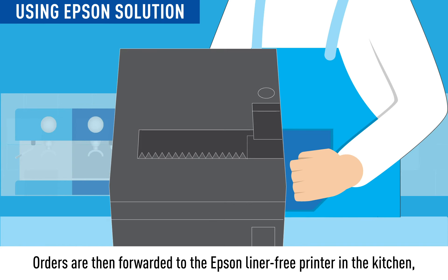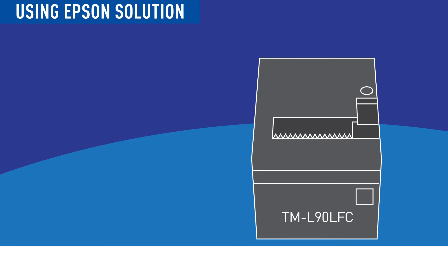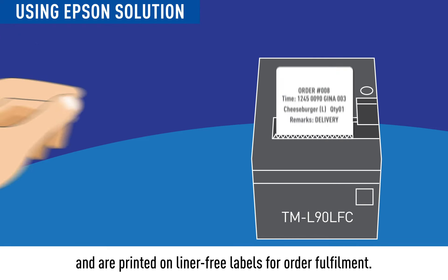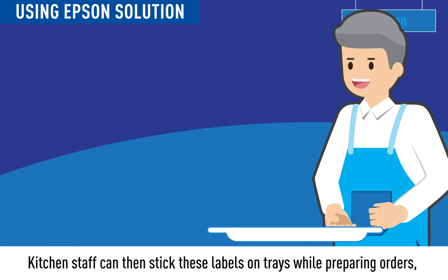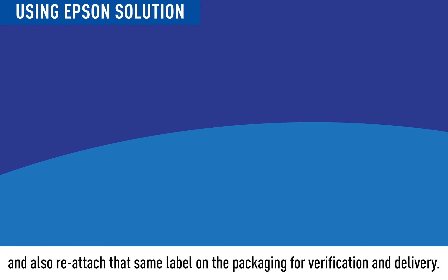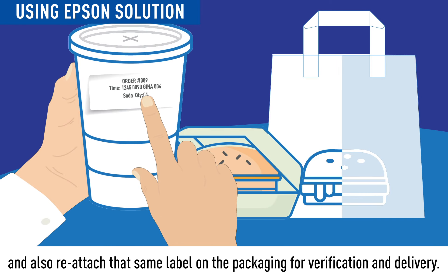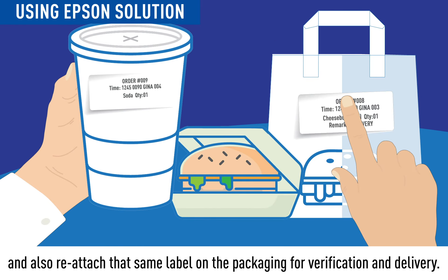Orders are then forwarded to the Absinthe liner-free printer in the kitchen and are printed on liner-free labels for order fulfilment. Kitchen staff can then stick these labels on trays while preparing orders and also reattach that same label on the packaging for verification and delivery.